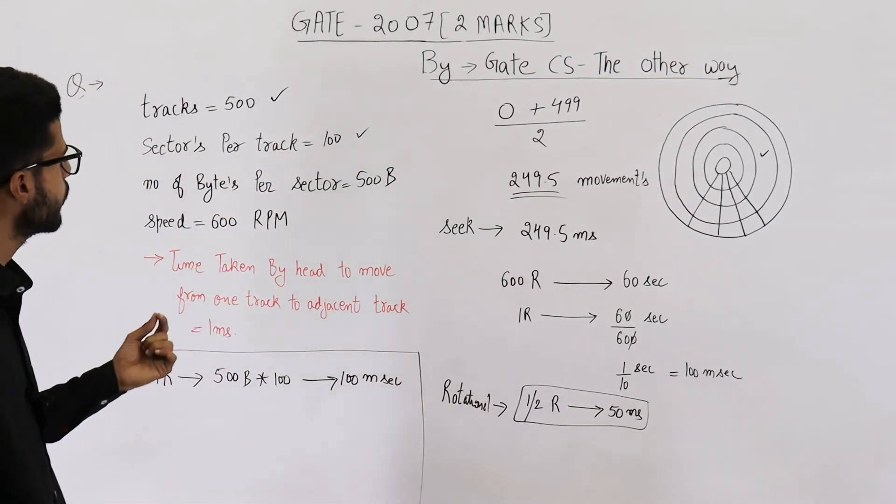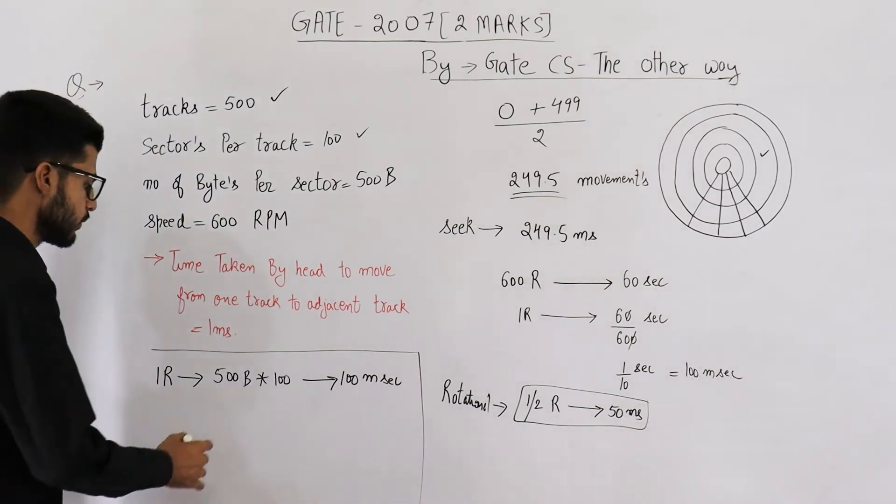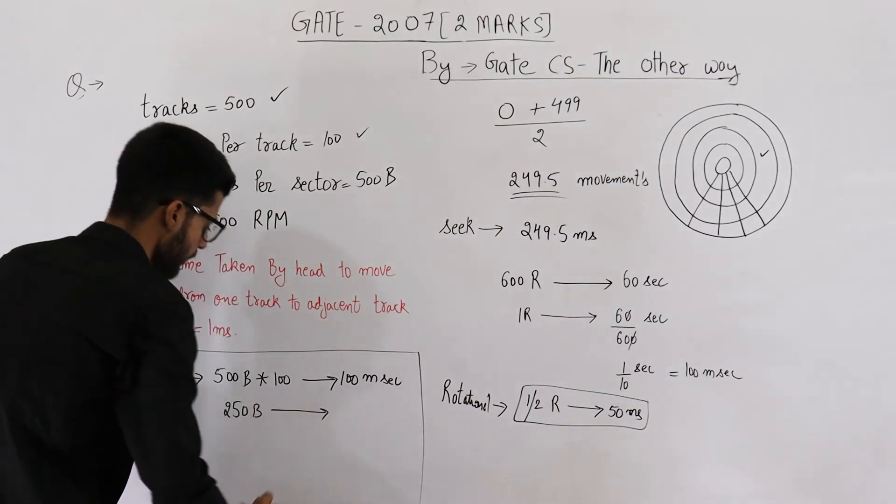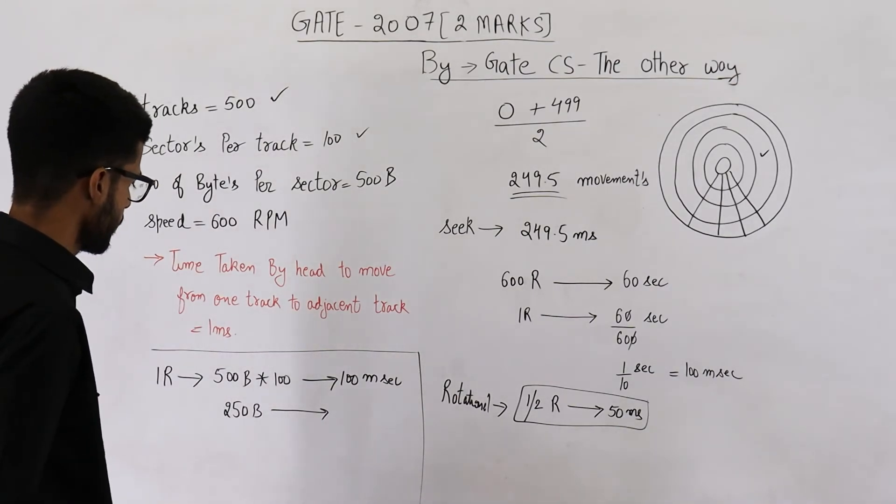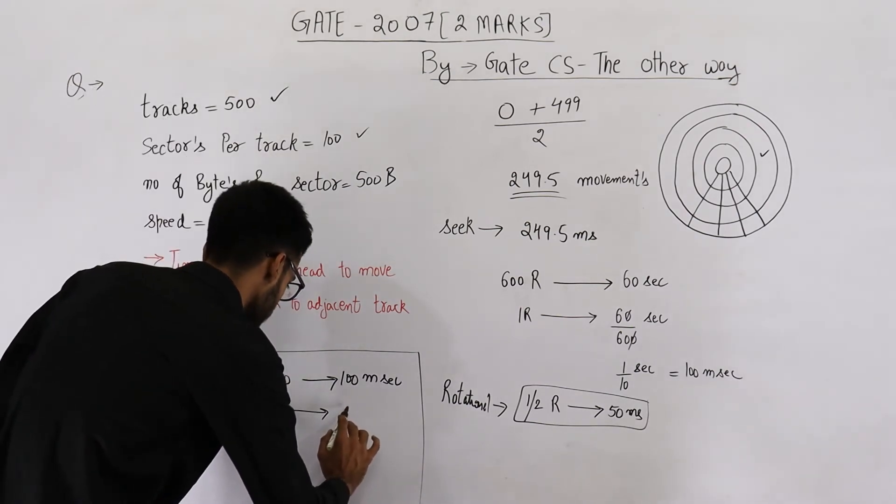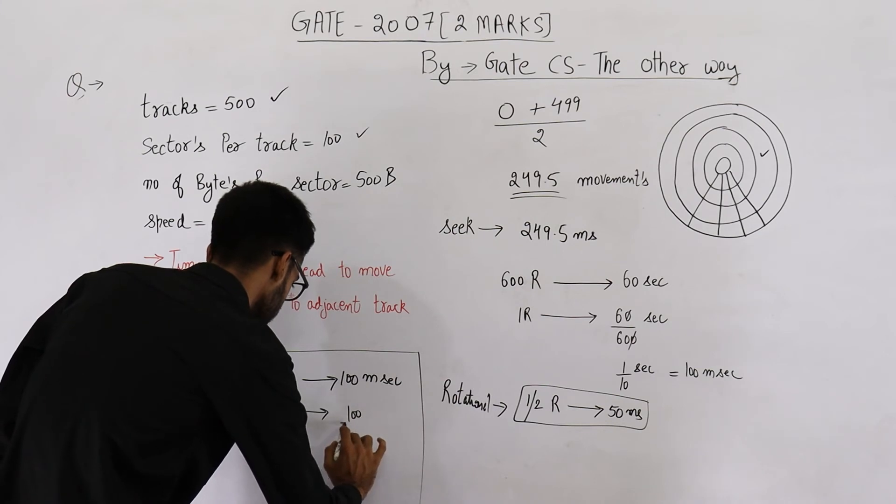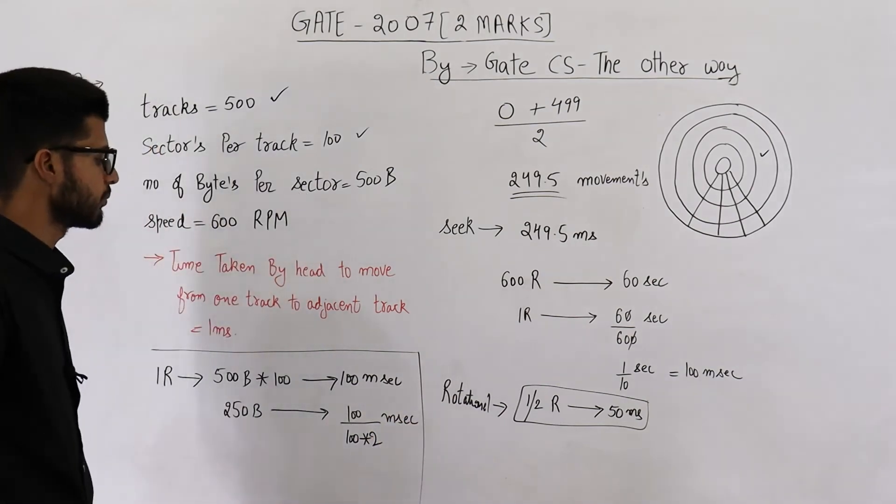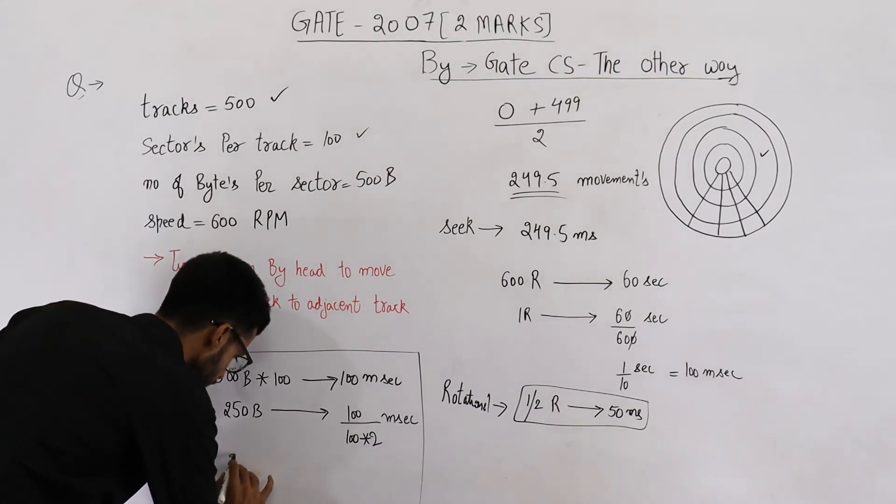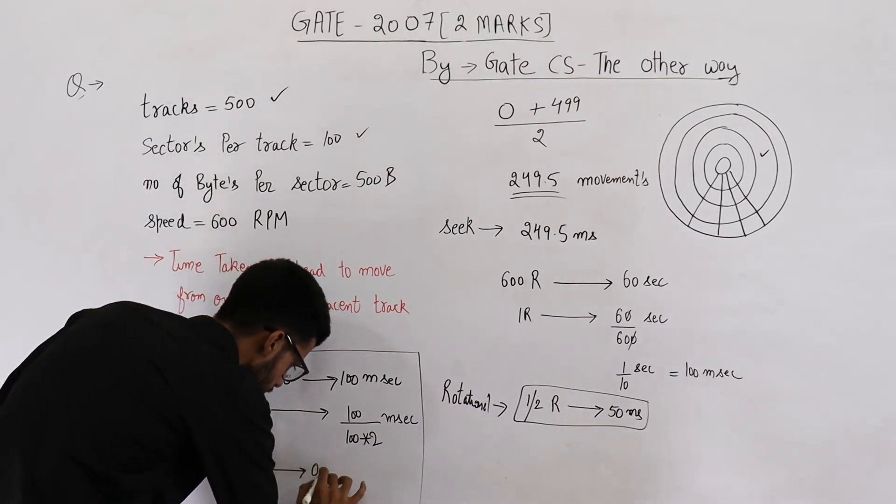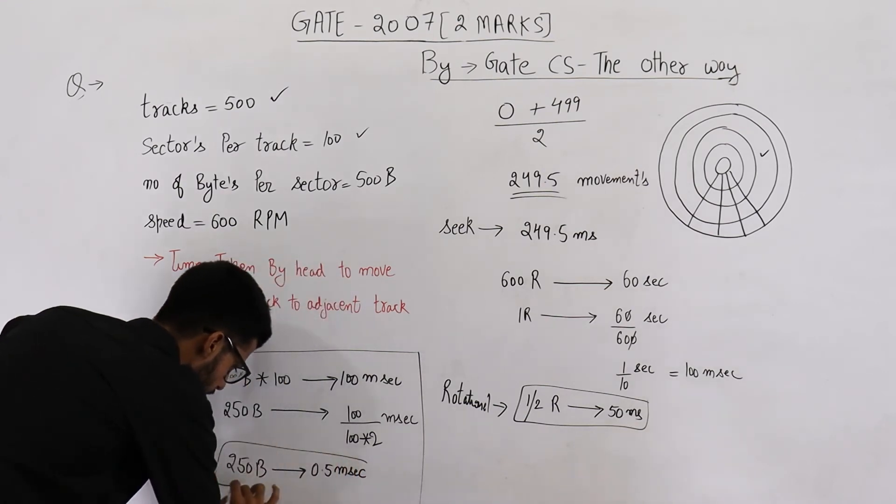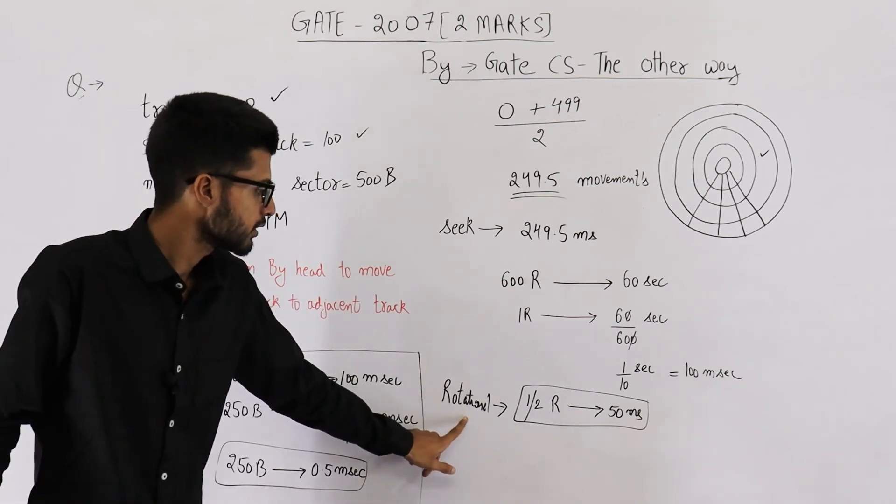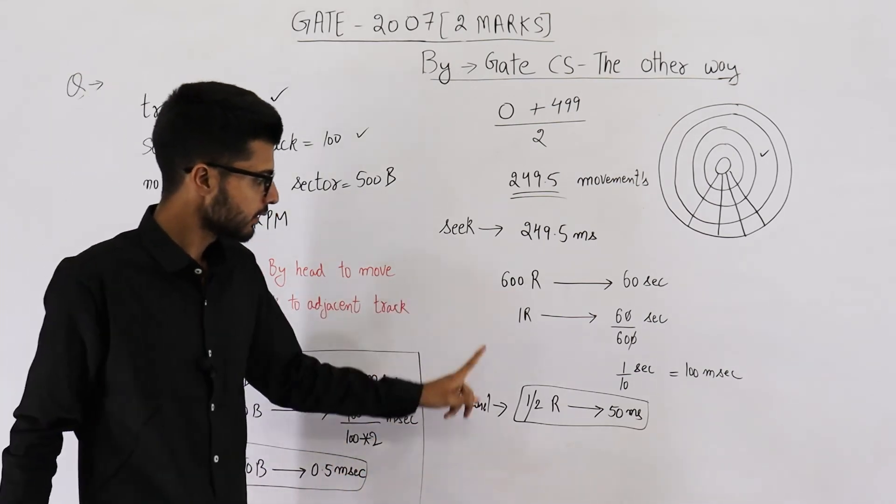Now let's find out how much time will be required for 250 bytes. So for 250 bytes, this will be 1 by 2 milliseconds or 0.5 milliseconds. Now from here, you can calculate the total time taken. The formula for total time taken is seek time plus rotational time plus transfer time. Add all these three and you will get your answer.